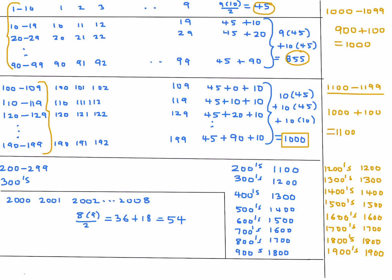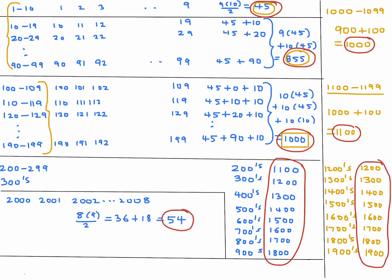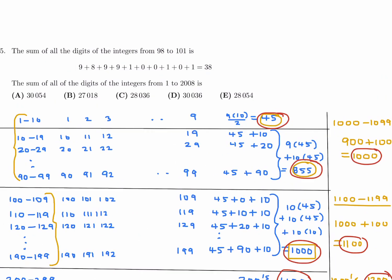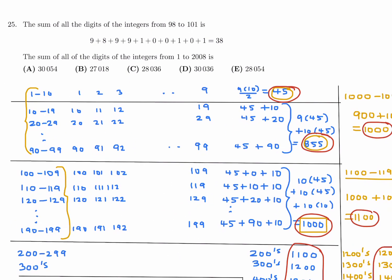There we go. I've got all my numbers here. So let's add all these up now. I've got 45, I've got 855, 1,000. Then I've got all of these. I've got 1,000, 1,100, all of these. And finally, my 54. Adding up all of those numbers, you get a grand total of 28,054. And for this question, that is answer choice E.